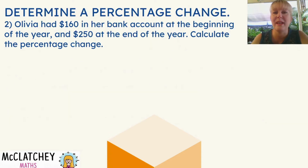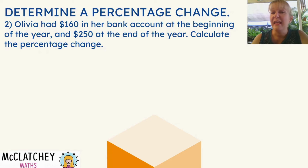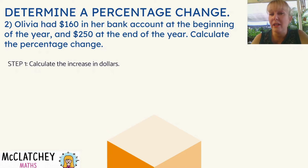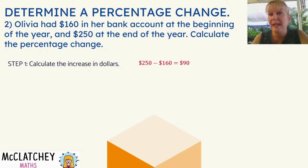Let's look at our second worked example today. We're going to work out a percentage change. Olivia had $160 in her bank account at the beginning of the year and $250 at the end of the year. Calculate the percentage change. The first thing we need to do is calculate our increase in dollars — how much did her bank account grow by in dollar terms? We simply take $250, take away $160, and we work out that her bank account's grown by $90.